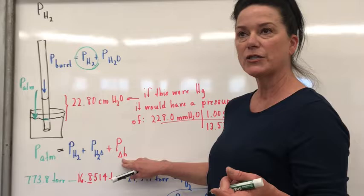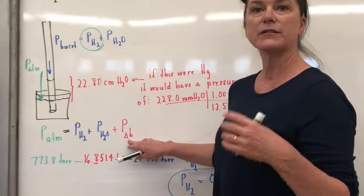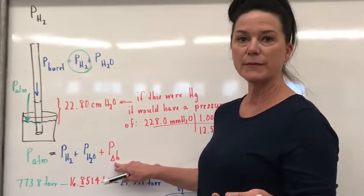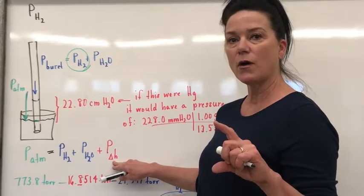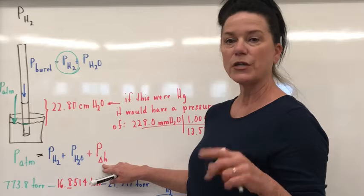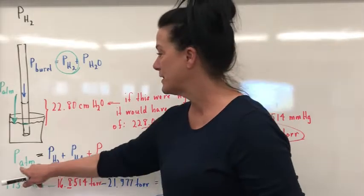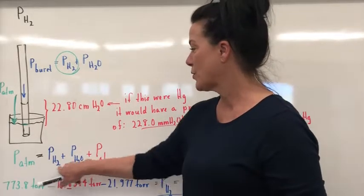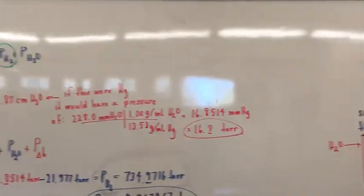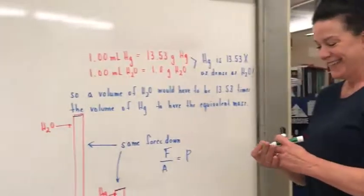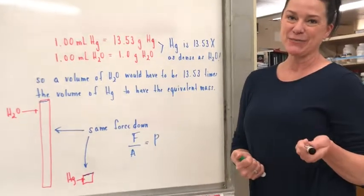Typically we think of pressure in units of atmospheres or torr, and a torr is a millimeter of mercury. And so if we had a way of converting these millimeters of water into millimeters of mercury, we could deal with the units: torr, torr, torr, torr.